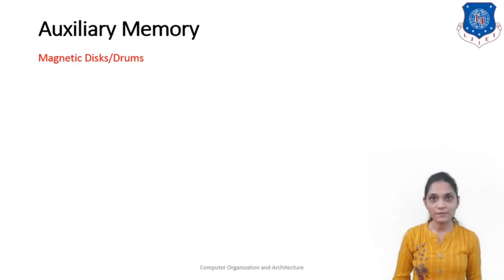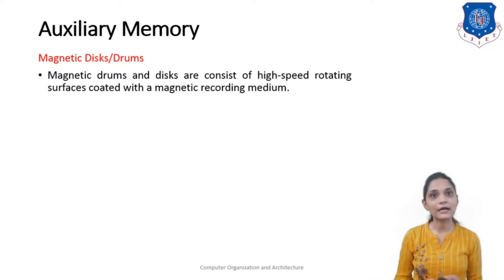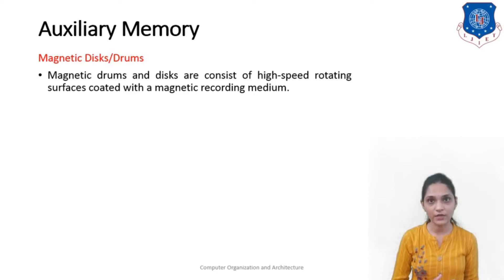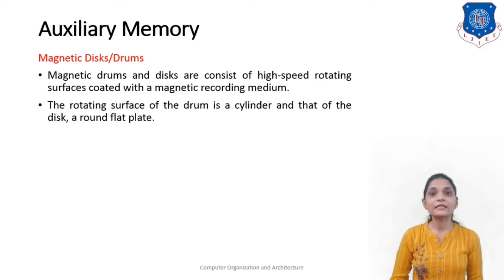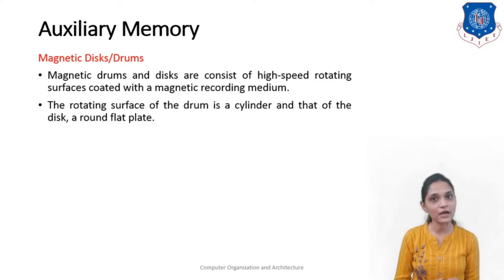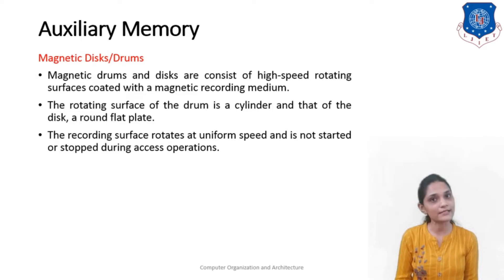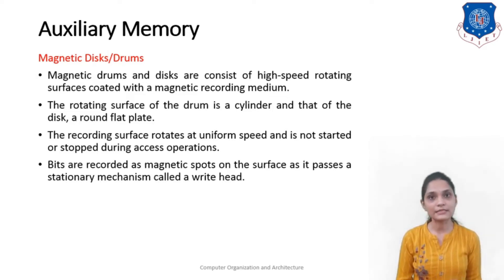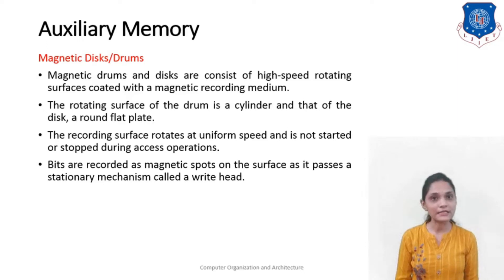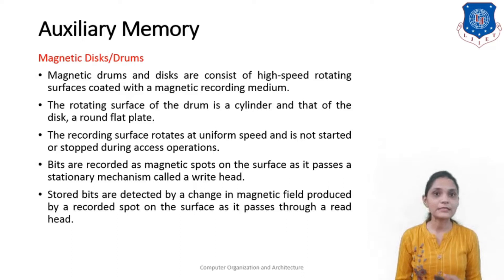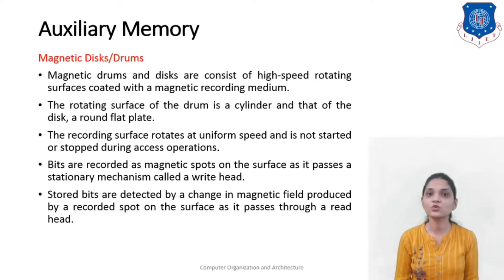Magnetic drums and discs consist of a high-speed rotating surface coated with magnetic recording material. The rotating surface of the drum is cylindrical, and that of the disc is a round flat plate. The recording surface rotates at a uniform speed and is not started or stopped during the access operation. Bits are recorded as magnetic spots on the surface as it passes a stationary mechanism known as a write head.